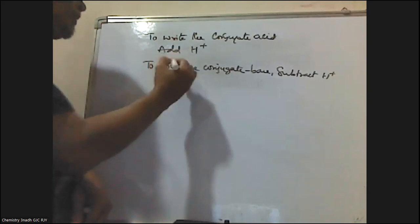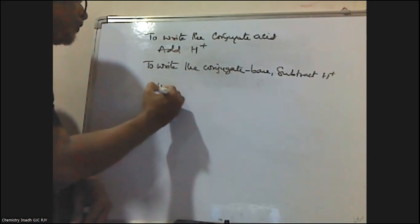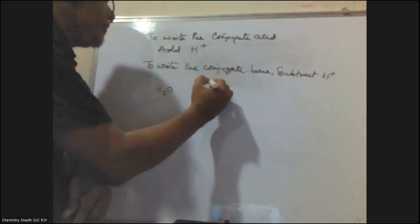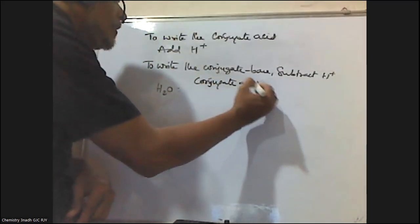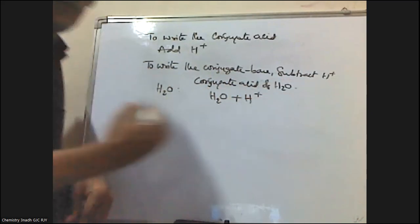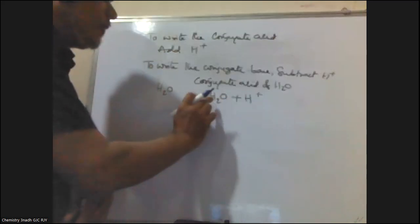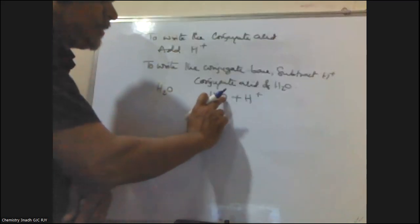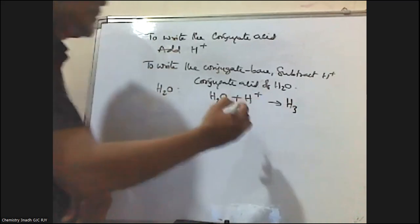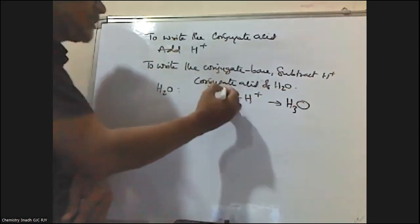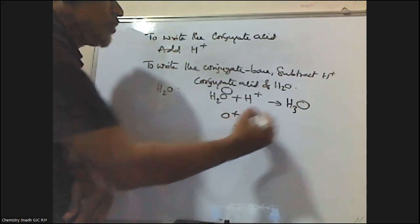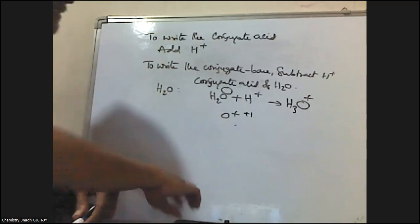Let me explain with an example. If you take H2O, the Conjugate Acid of H2O is obtained by adding H⁺. H2O plus H⁺ — there are two hydrogens plus one more hydrogen, giving three hydrogens total. The charge on H2O is zero, plus one from H⁺, so overall it is H3O⁺. The Conjugate Acid of H2O is H3O⁺.